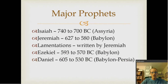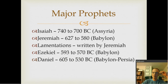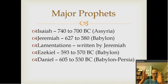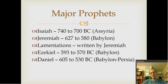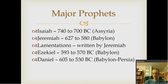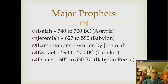That takes us to the major prophets. Isaiah was around 740 to 700 BC, during the time of Assyria. Jeremiah was about 627 to 580 BC, during Babylon. Lamentations is traditionally attributed to Jeremiah, though not proven since his name doesn't appear in it. Ezekiel was about 590 to 570 BC, during Babylon. Daniel was from about 605 to 530 BC — he started in the time of Babylon and went through to the time of Persia.